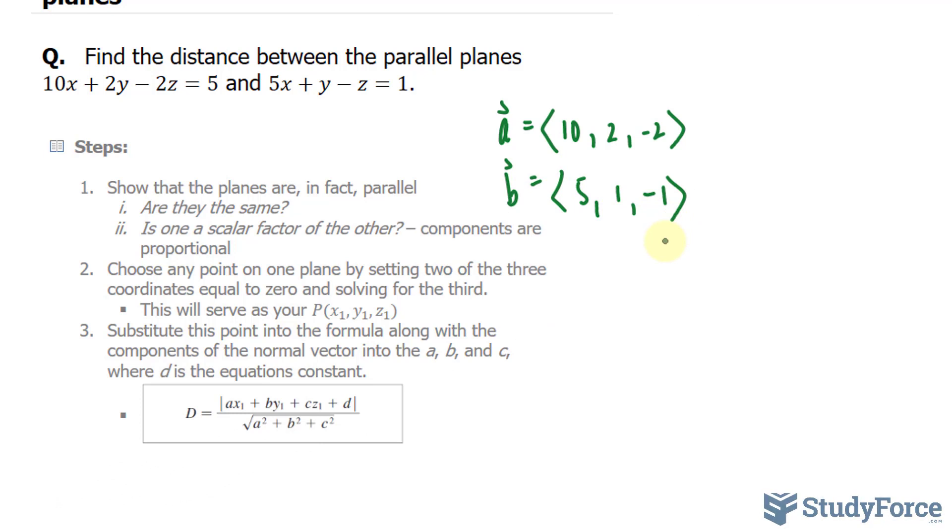You can tell that these planes are parallel if these are the same or if one is a scalar factor of the other. Take, for example, vector b. If I multiply each of these components by 2, I'll end up with the components of a. So these planes are parallel.